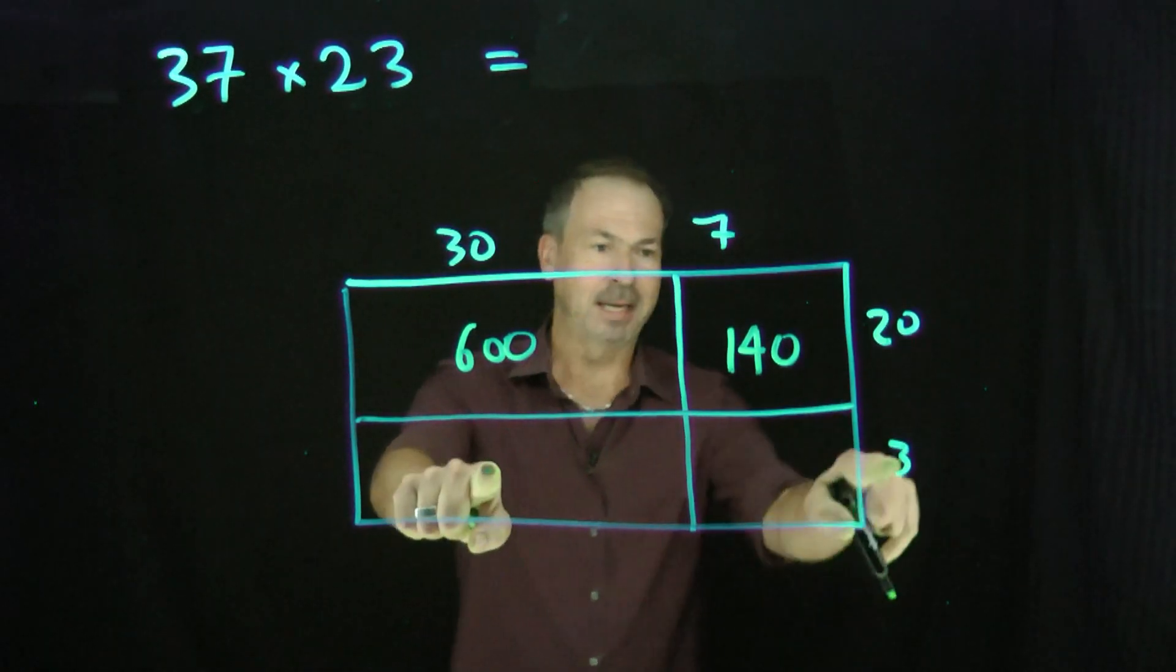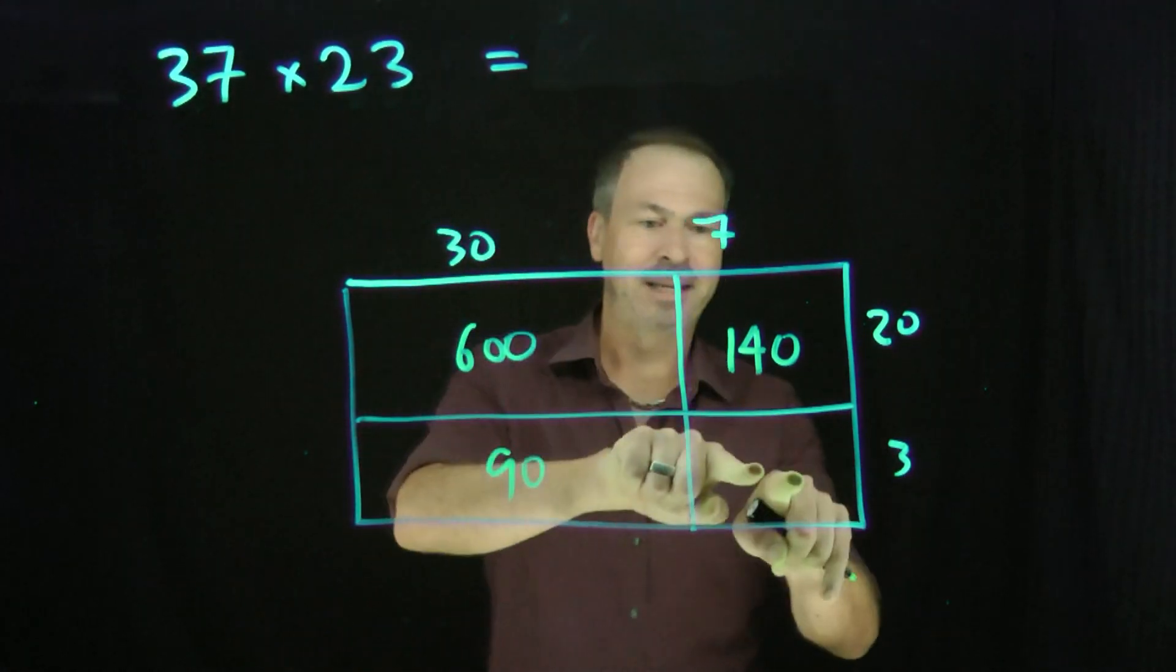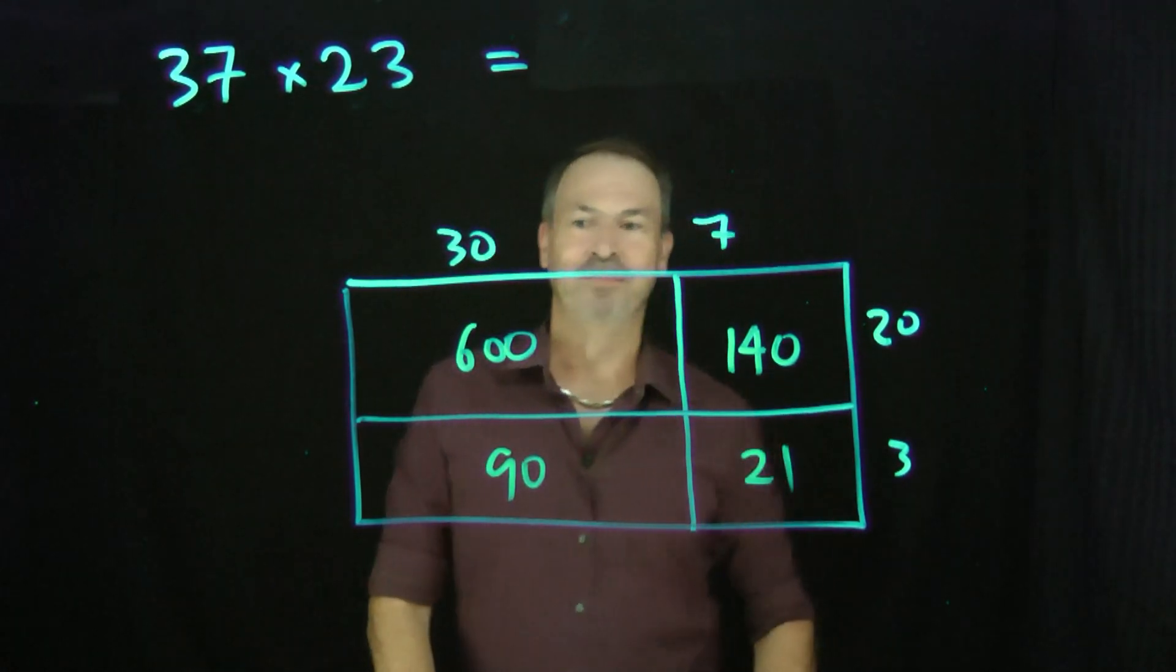This piece is 20 by 7. So that's 14 with an extra zero. 140. Great. Area of this piece is 3 times 30. That's 90. Area of this piece is going to be 3 times 7, 21. Great.